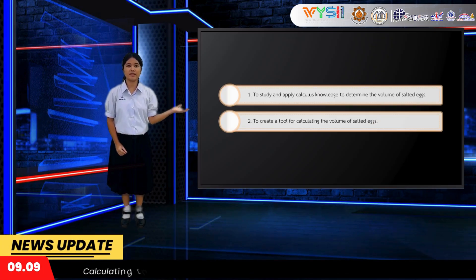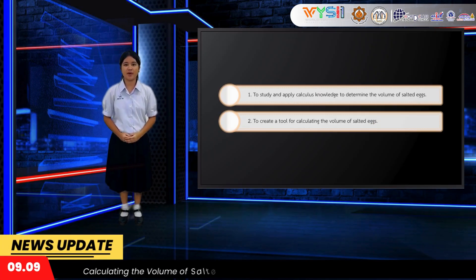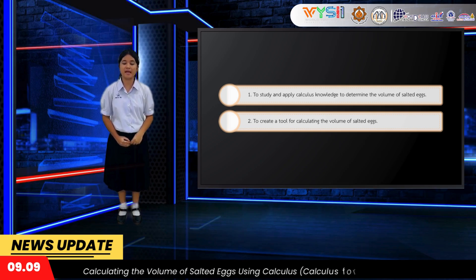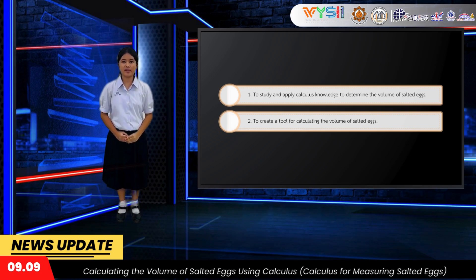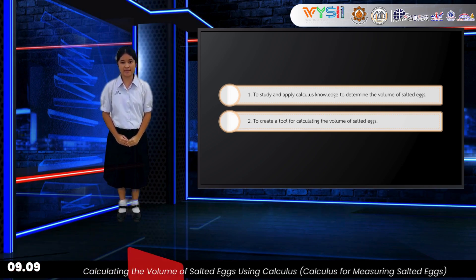These include creating tools for facilitating accurate volume calculation of solid eggs. The key objectives are: number one, to study and apply calculus laws to determine the volume of solid eggs; and number two, to create a tool for calculating the volume of solid eggs.